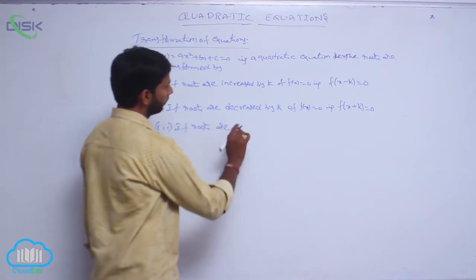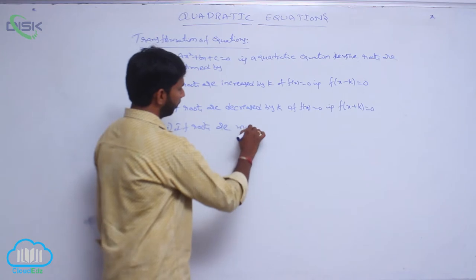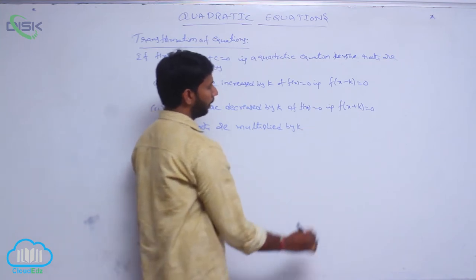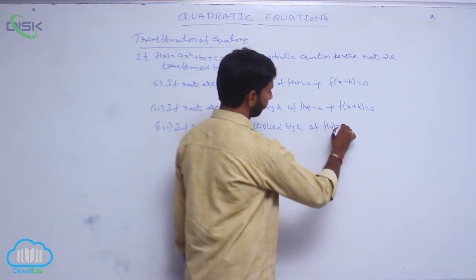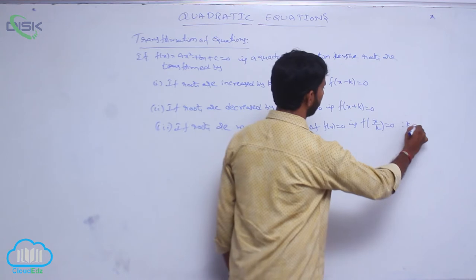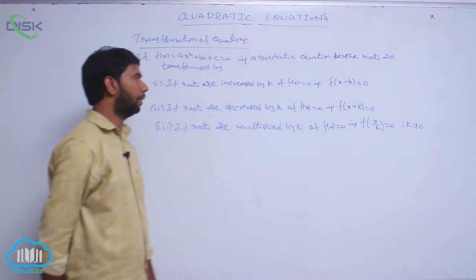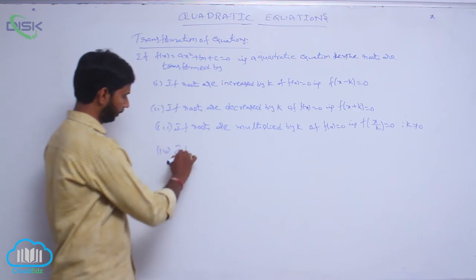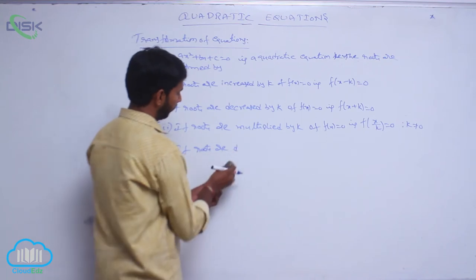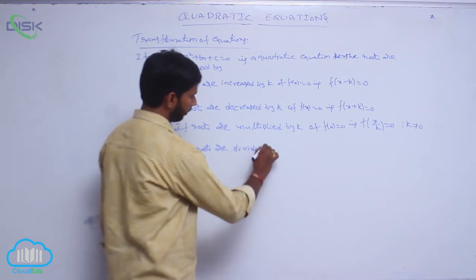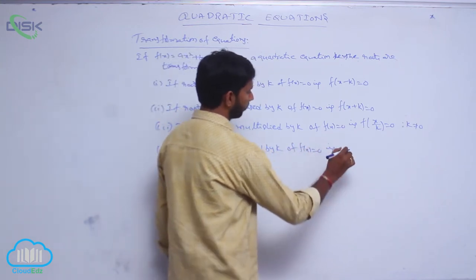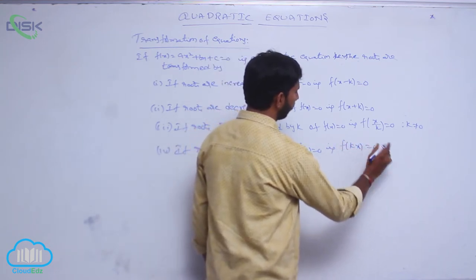If roots are multiplied by k, then f of x equal to 0 becomes f of x by k equal to 0, where k is not equal to 0. If roots are divided by k, then f of x equal to 0 becomes f of kx equal to 0.